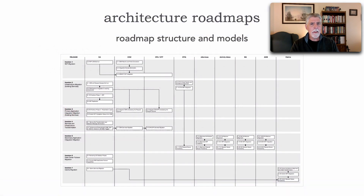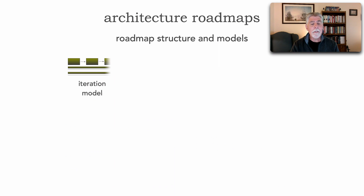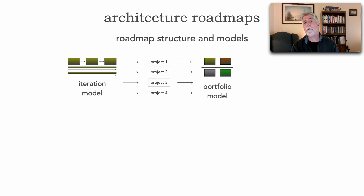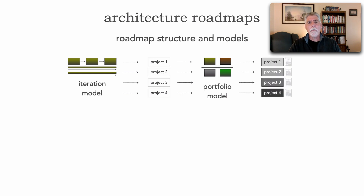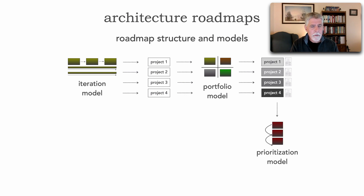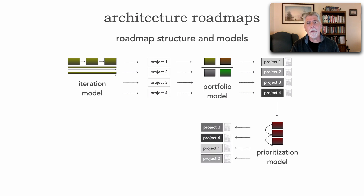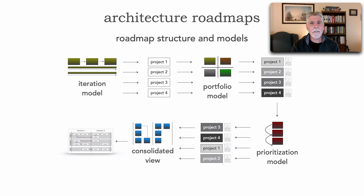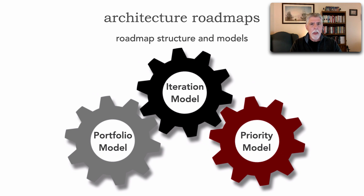In lesson 96, if you didn't already see that, please watch that first. We took a look at the structure of a roadmap, and a roadmap consists really of those three models. The first is that iteration model which produces projects. Those projects get fed into a portfolio model which then qualifies, documents, and sizes all of those projects. From there, those get fed into a prioritization model which then prioritizes projects based on sizing, need, budget, and finally creates the consolidated view. All of these models work as cogs in a synergistic way, so that if any of these cogs change, the other models have to change as well, which makes it challenging to keep an architectural roadmap in sync.